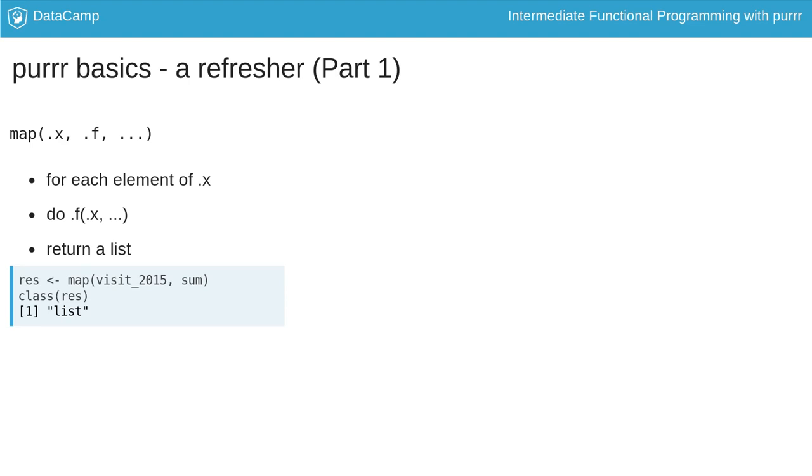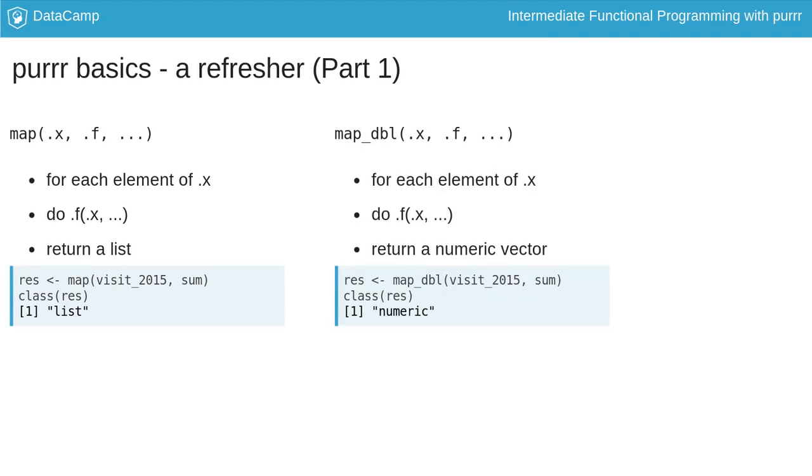One strength of Purrr is that it is type stable. This means that you always know upfront the class of the output. Here, for example, we are using map_dbl. Map_dbl does the same operation as map, but the output is different. As you can see, the result is a numeric vector rather than a list.